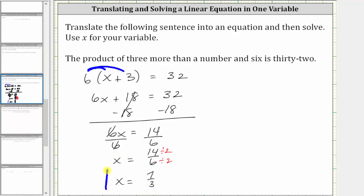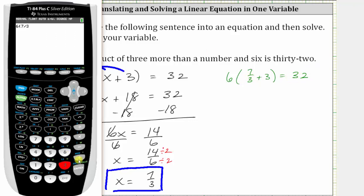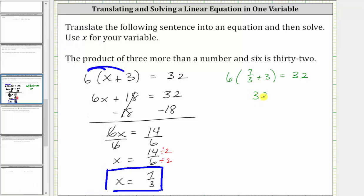Let's verify this does satisfy the equation by substituting 7 thirds back into the original equation. Performing the substitution gives us six times the quantity 7 thirds plus three equals 32. Let's evaluate the left side on the calculator. Notice the left side does simplify to 32. 32 equals 32 is true, verifying the solution is correct.